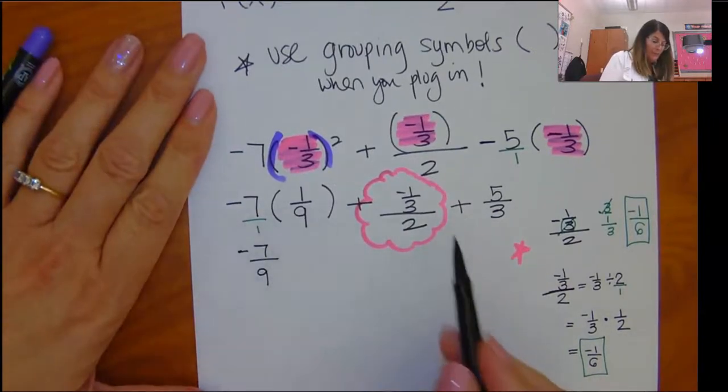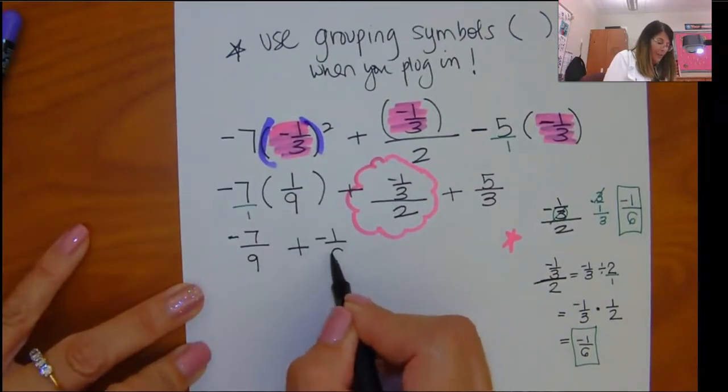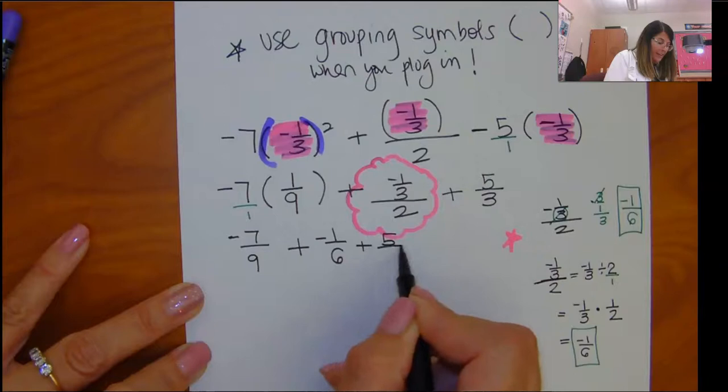All of that was just to get this part here. Plus negative 1 sixth plus 5 thirds.